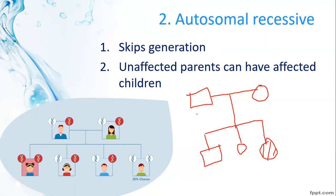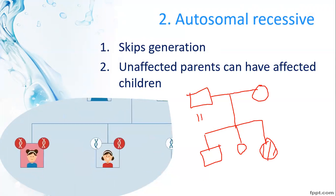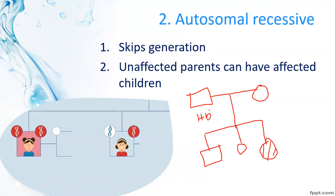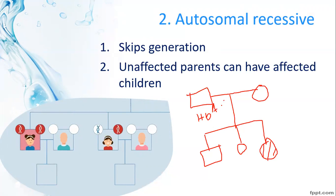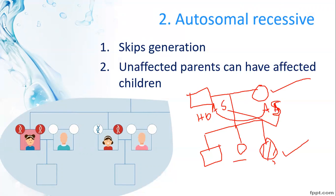An example of autosomal recessive is sickle cell anemia. Using alleles A and S: if both parents are heterozygous carriers (A and S), they are unaffected. The carriers are heterozygous — homozygous recessive (SS) is required to express the disease. The character is only expressed when homozygous, so one generation can be skipped. This confirms autosomal recessive inheritance.